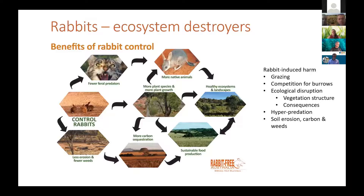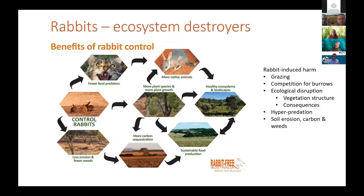Rabbits truly are ecosystem engineers — unfortunately and most noticeably of the destructive kind. They influence whole ecosystems and landscapes through a web of direct and indirect influences. The most direct effect is on plant growth and particular plant species abundance, then on soil disturbance which results in erosion and weed proliferation. Indirect effects include maintenance of feral predator populations with flow-on effects on native animal and bird populations. It is a sad reality that many of the destructive effects of invasive rabbits are unseen, ignored or misunderstood by all but those with well-trained eyes.